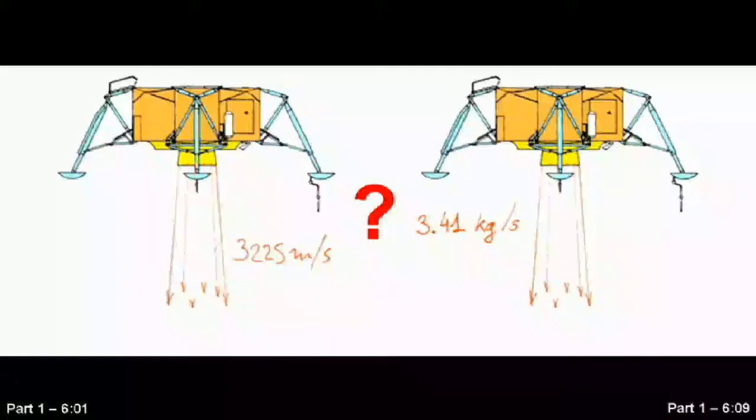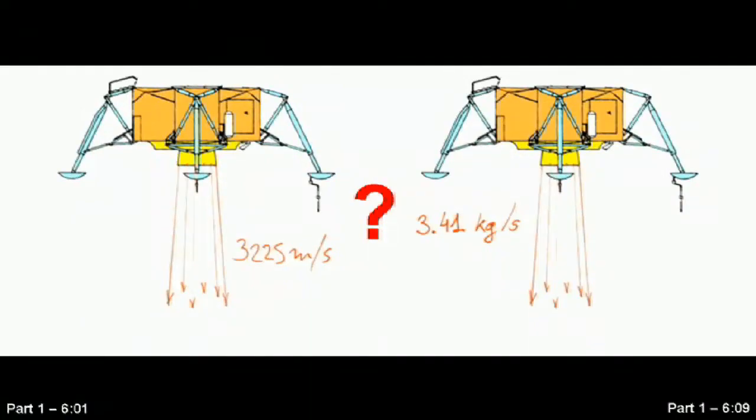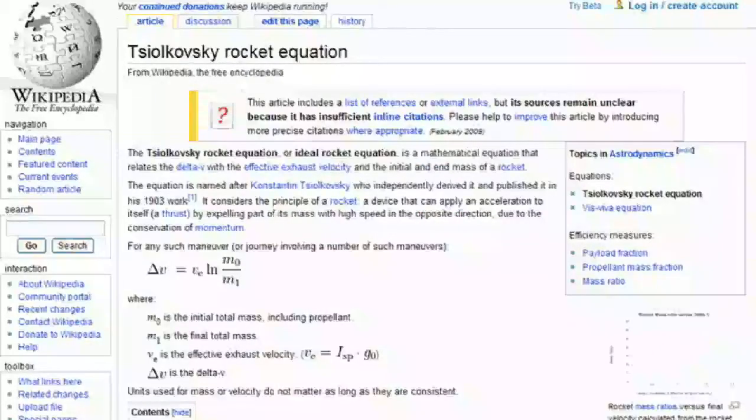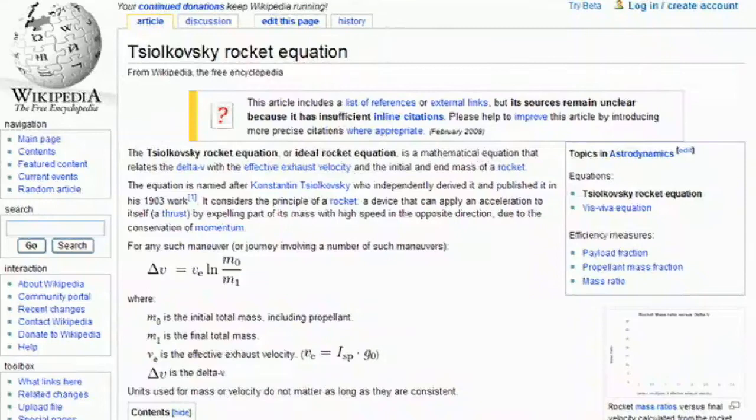I left Part 1 by insinuating that Gillian boo-booed in his calculations of flow rate and exit velocity, so here's the data and calculations to back that up. VE, the effective velocity, is not the actual velocity of the exhaust gases.